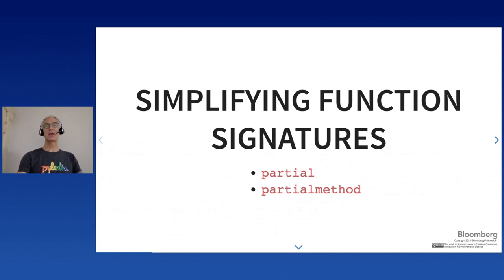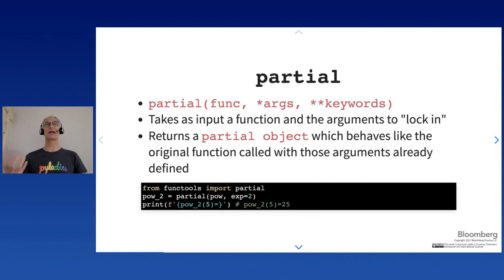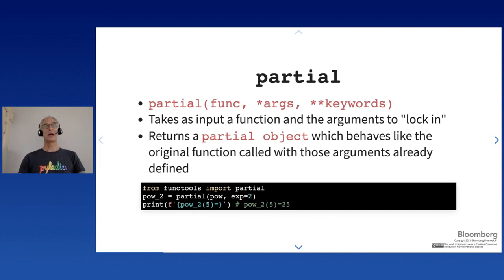Simplifying function signatures covers partial and partialmethod. partial takes a function and a set of positional and keyword arguments, locking those arguments in, and returns a partial object that behaves like the original function with those arguments already defined. For example, we take the built-in pow function and pre-define the exponent to 2, creating a new function pow2. Calling pow2(5) gives us 25.